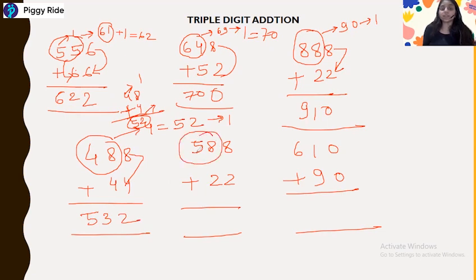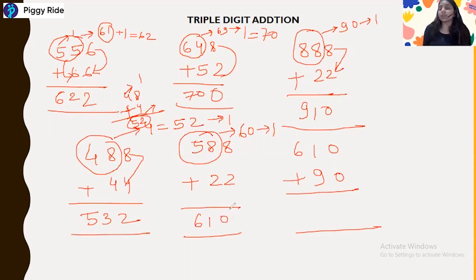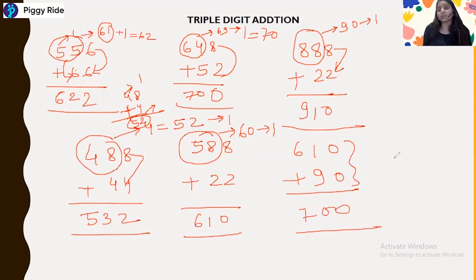Next: 582 plus 22. 58 plus 2 gives 60, and 60 increases by 1 because 8 plus 2 is 10 and the end digit is 0, so the answer is 610. Next, 610 plus 90: this clearly becomes 700.